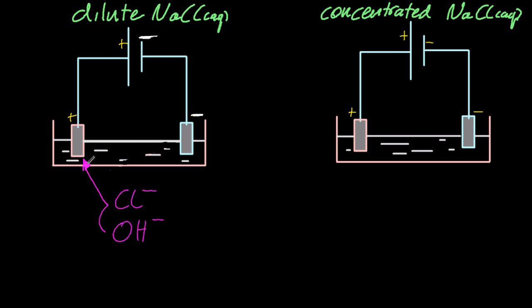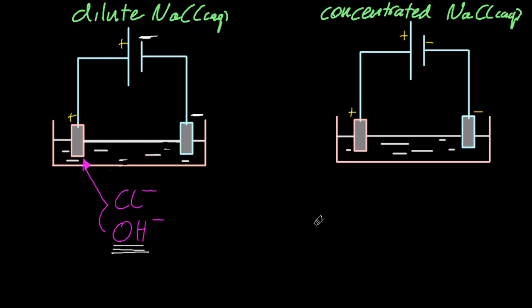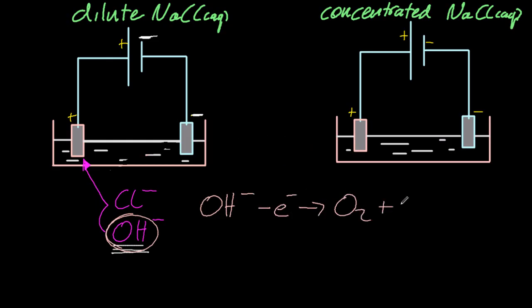Looking at the negative ions, they're attracted to the positive electrode. This series of discharges tells you which one is going to be preferentially discharged. OH⁻ beats Cl⁻, so OH⁻ wins — that's going to make oxygen. This looks like a complicated equation, but it's in the data booklet so you don't have to memorize it, as long as it's paper two.